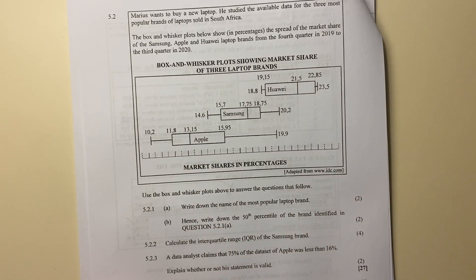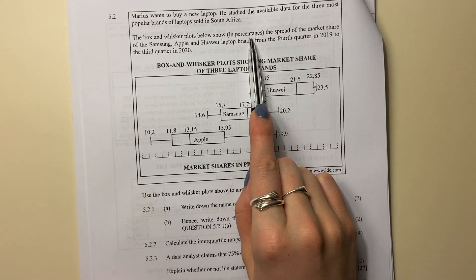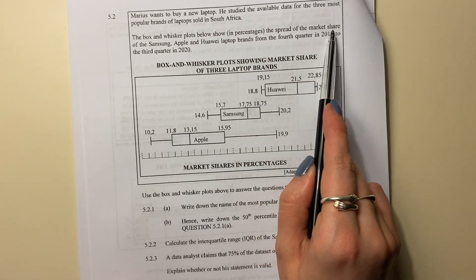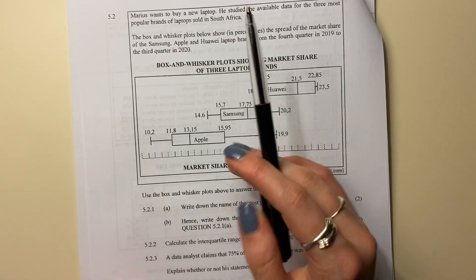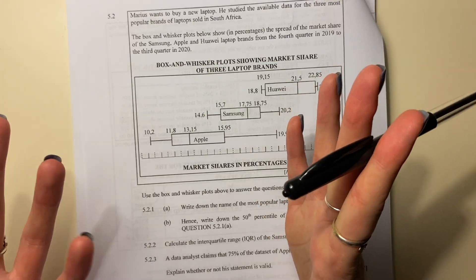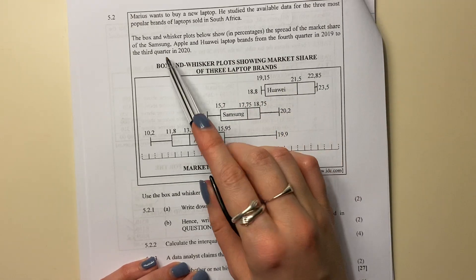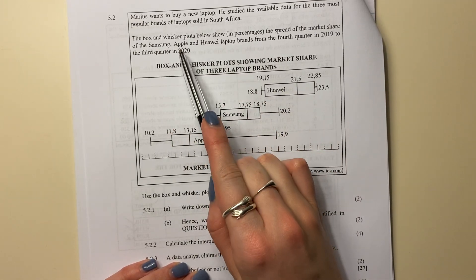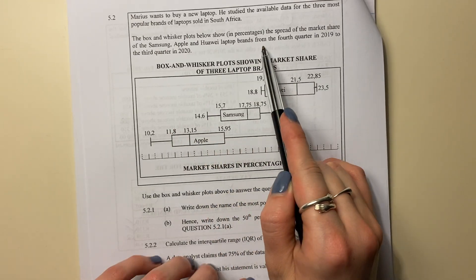You should be able to recognize what that means. They show in percentages the spread of the market share. Market share basically means how much of the market out there do they own, or do they capture.